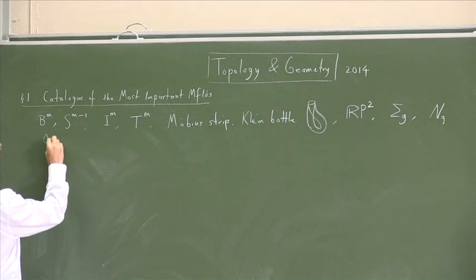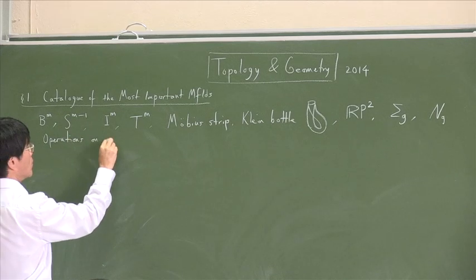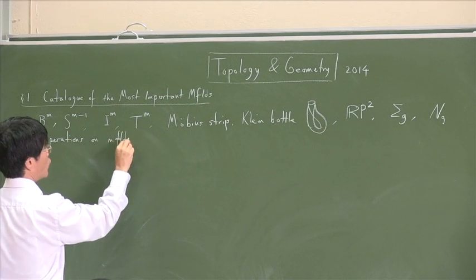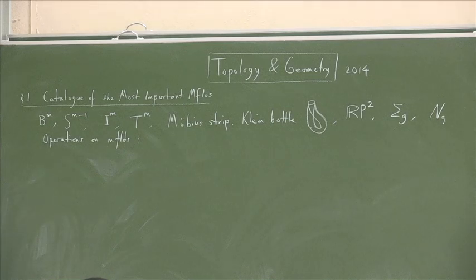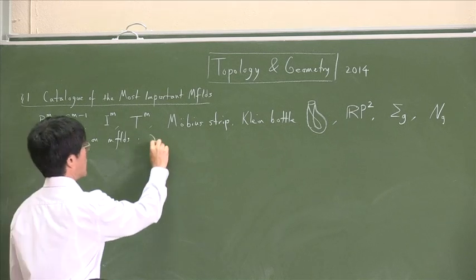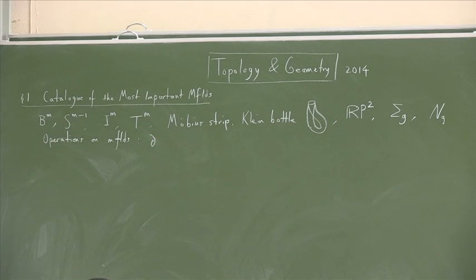And also, we had operations of manifolds. What do we mean? Well, given those ingredients, basic manifolds, you could do some sort of calculation with them, or you could add, multiply, and so on, or take quotients. All right. You can take the boundary, for example, of the ball and get this sphere.